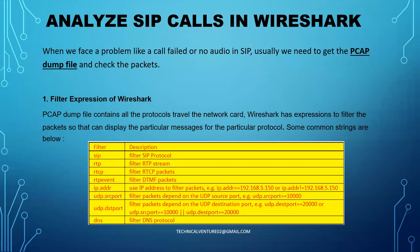How we can analyze these calls in Wireshark — I'm going step by step. Whenever you are facing a problem like call failed or no audio, you need to get the pcap dump file through the sniffer and check the packets. Before going to Wireshark, let me give you a brief about the filter expressions — how you can filter your calls. Your pcap dump file contains the protocols which travel the network card, and Wireshark has expressions to filter those packets.